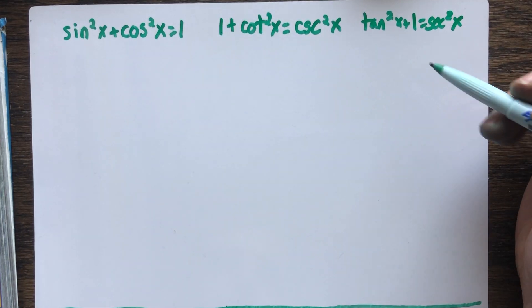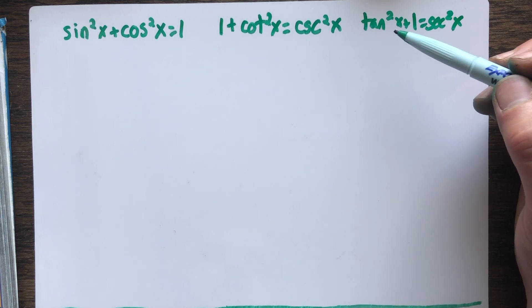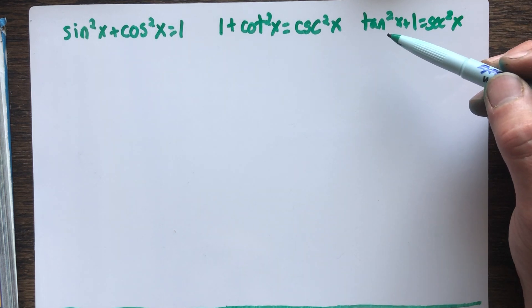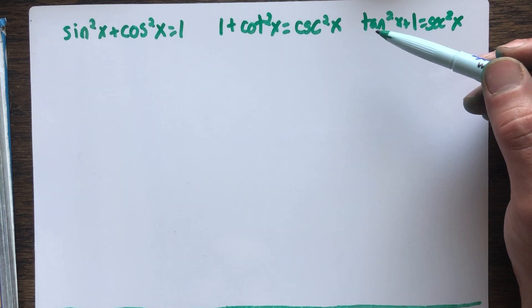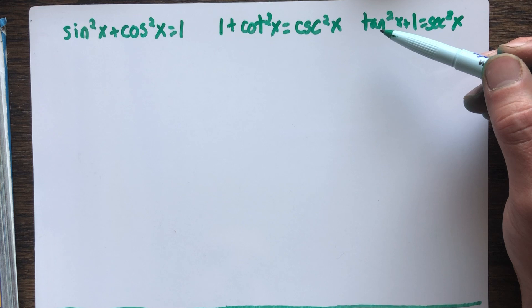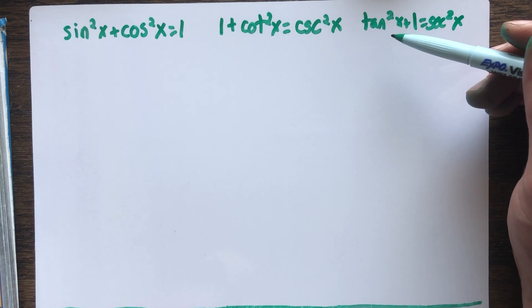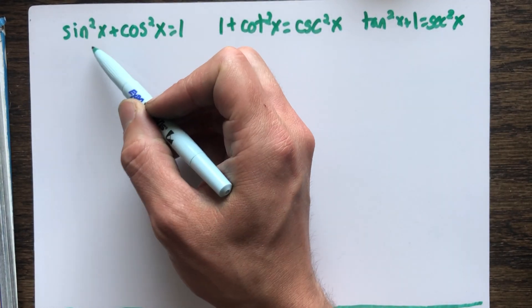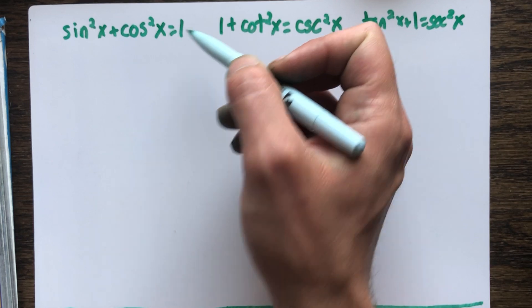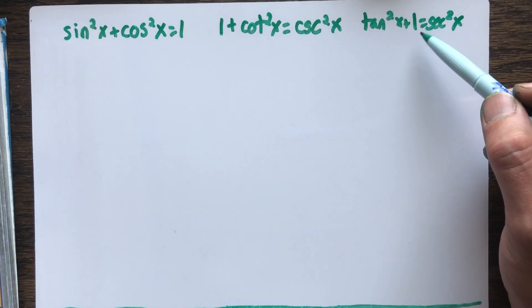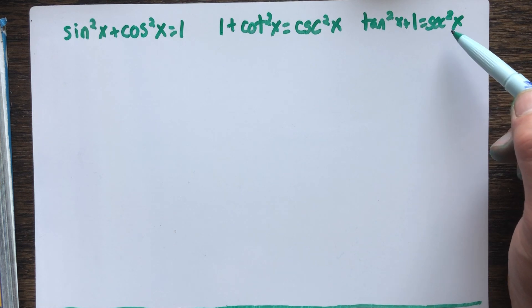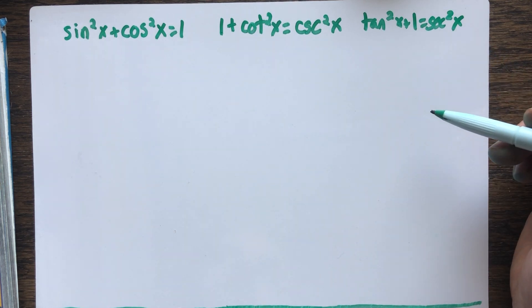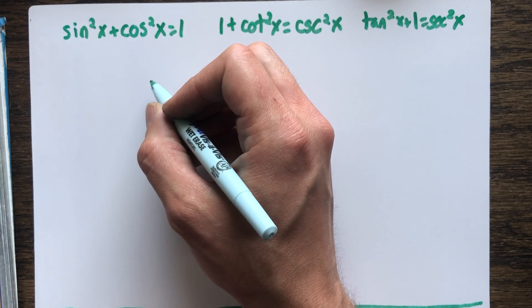What I'm going to do in this video is show you how you can manipulate the Pythagorean identities to help you in problems. It's not always going to be as simple as seeing a sine squared plus cosine squared in your problem and replacing that with one, or seeing a tangent squared plus one and replacing that with secant squared.